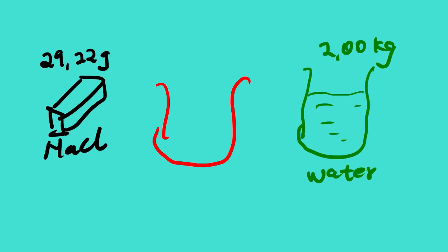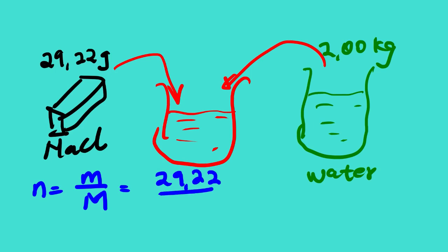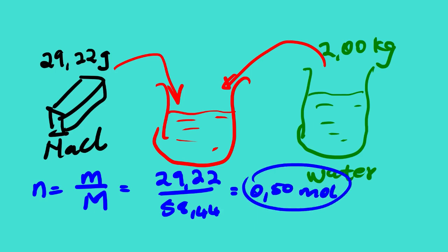Let's look at an example. We have 29.2 grams of sodium chloride and 2.0 grams of water — we mix the two and find the molality. First, we calculate the number of moles since we are given the mass in grams. The mass is 29.22 grams and the molar mass of sodium chloride is 58.44, giving us 0.50 mol.